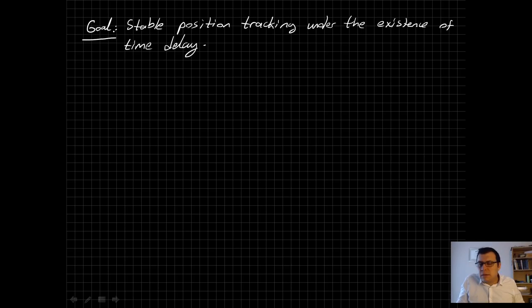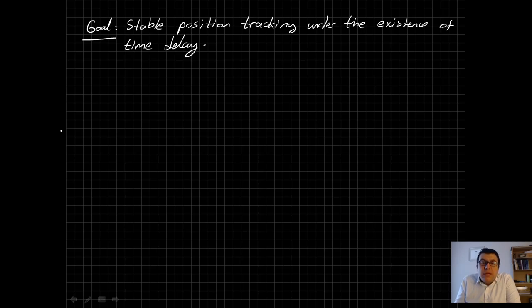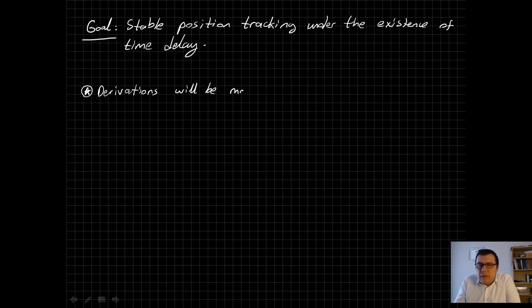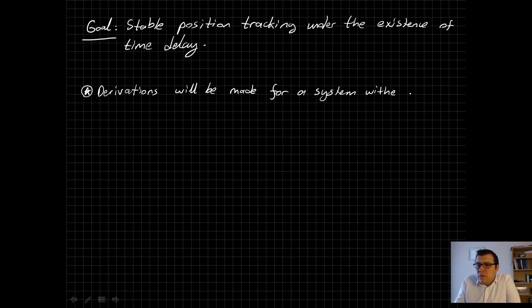Now we can start the derivation of our controller. As in previous applications, the derivations will be made for a system with one degree of freedom. For a general robotic system, it is straightforward to generalize this to multi-degree-of-freedom applications. We will have several assumptions before starting.